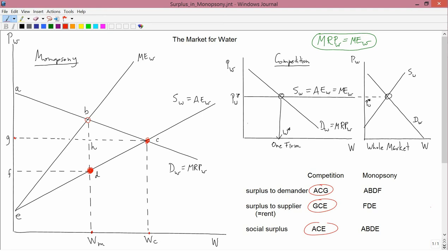So let's work on this, the surplus to the demander. That's the area below the demand curve and above the price line. The demand curve is AB. I don't say AC because you only go to WM because we're the monopsonist, and the monopsonist doesn't buy as much as the competitive firm.